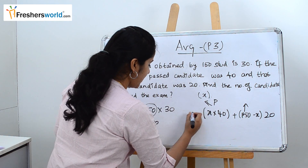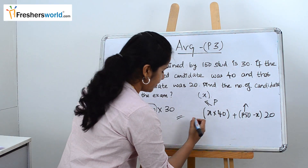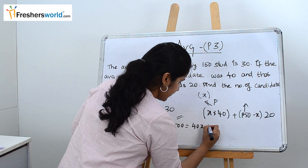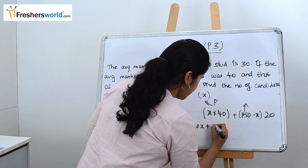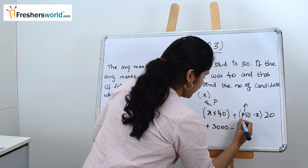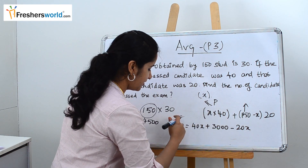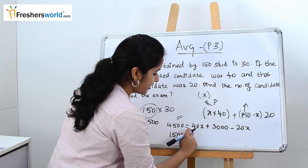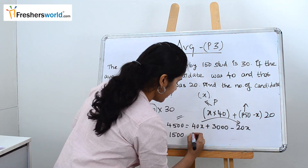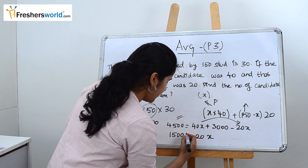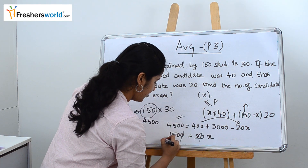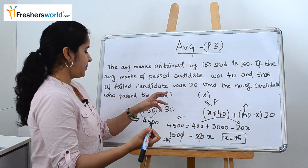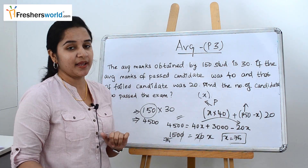Now we equate both sides of the equation: 4500 equals 40x plus (150 minus x) into 20, which is 3000 minus 20x. Taking 3000 to the left side: 4500 minus 3000 gives 1500. Then 40x minus 20x gives 20x. So x equals 75. The number of candidates who passed the exam is 75.